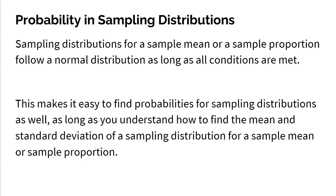Sampling distributions for a sample mean or a sample proportion follow a normal distribution as long as all conditions are met. I'm going to briefly talk about those conditions in this video, but again, this video is more about the probability. When you know that you follow a normal distribution, this makes it very easy to find probabilities with sampling distributions, as long as conditions for both means and proportions are met.